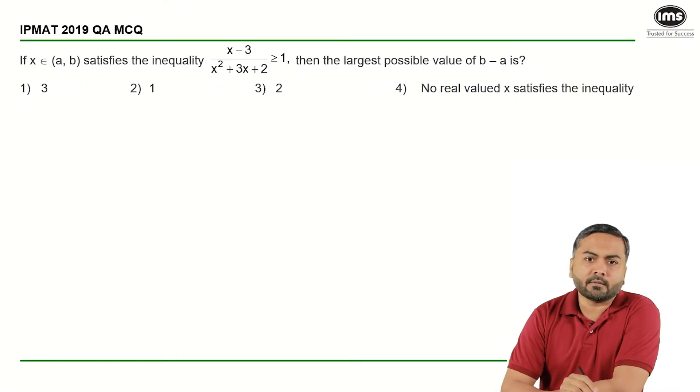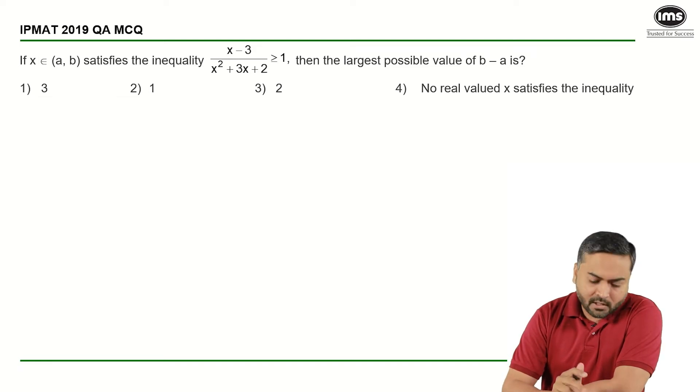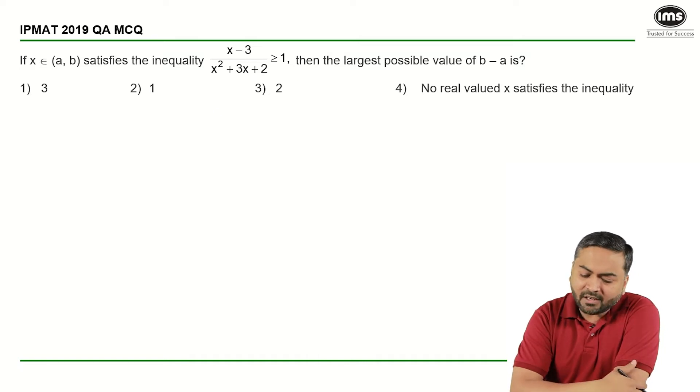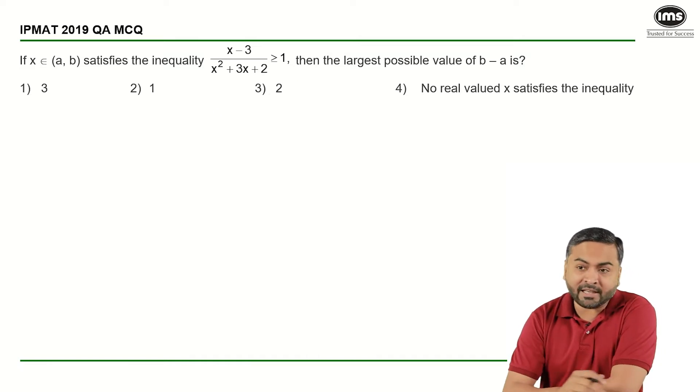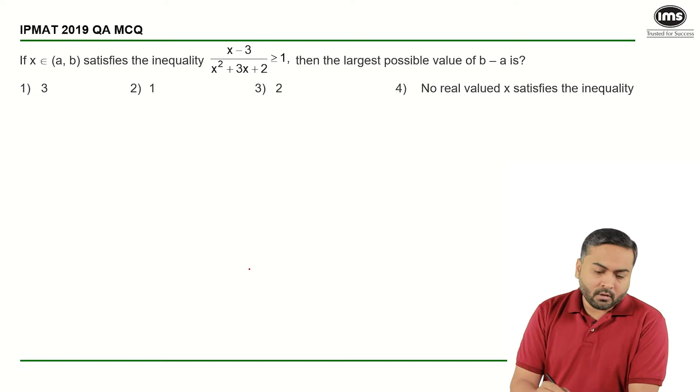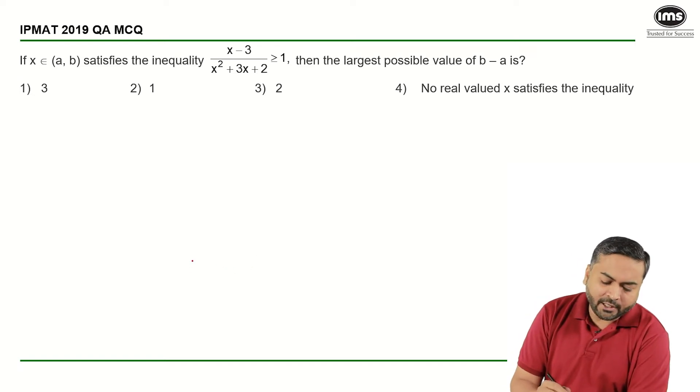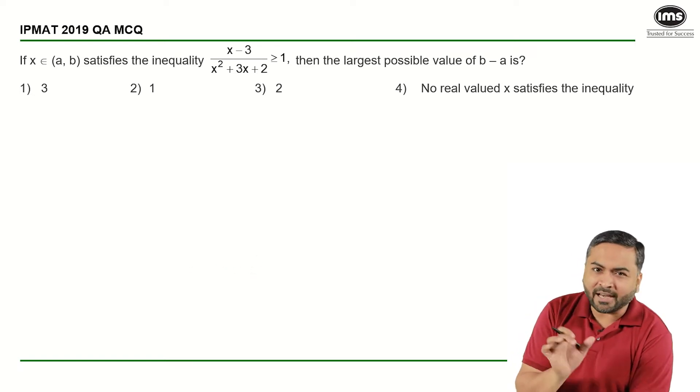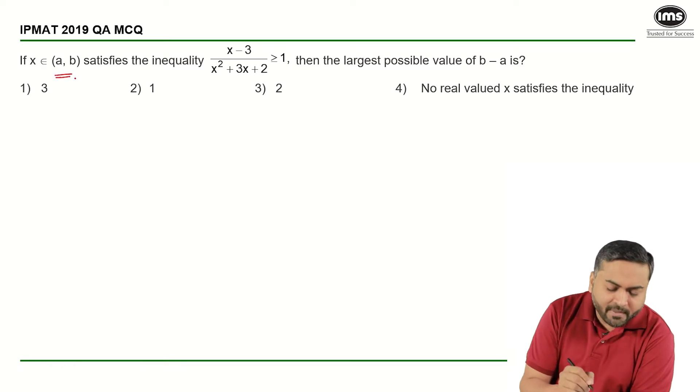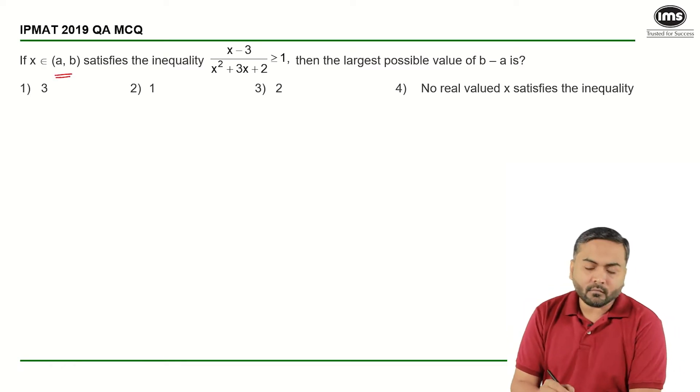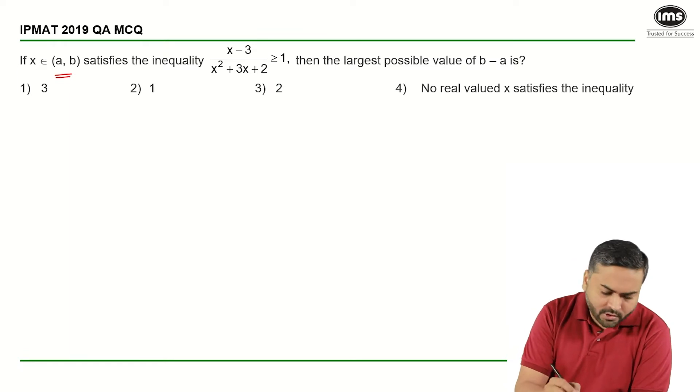If you look at this particular question, if x belongs to (a, b) and it satisfies the given inequality, then the largest possible value of b minus a is? So basically I need to find out the values that x can take, the range, because that is what it is, x belongs to (a, b). Let us see how we can solve this question.